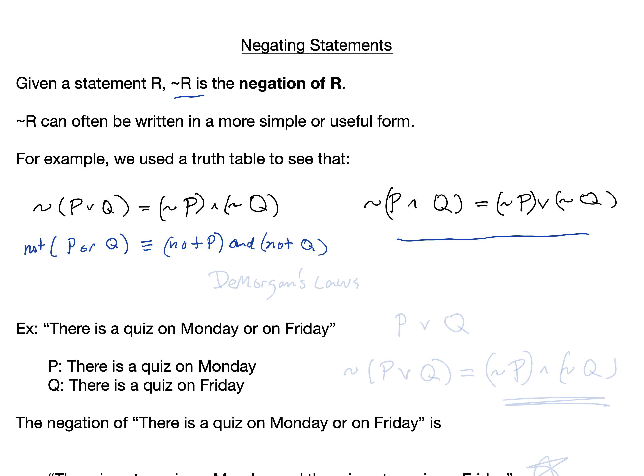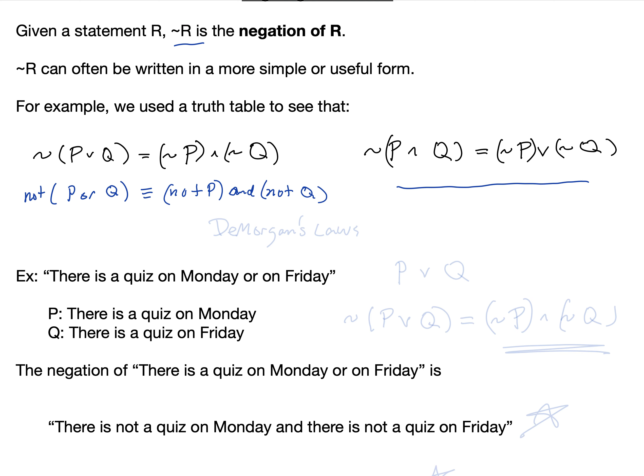Let's start with an example. Say we have: there is a quiz on Monday or on Friday. That's an or-statement. Let p be the statement 'there is a quiz on Monday' and q be 'there is a quiz on Friday.' So this is a statement of the form p or q.